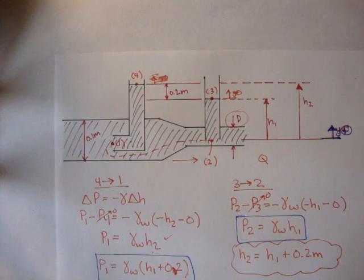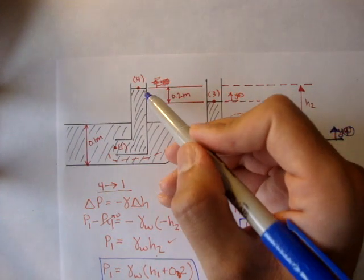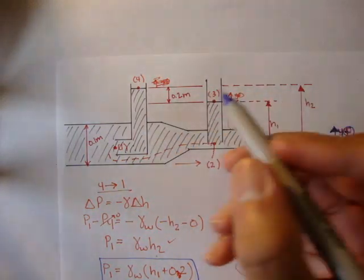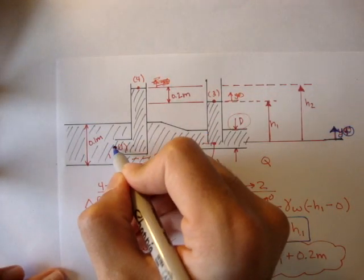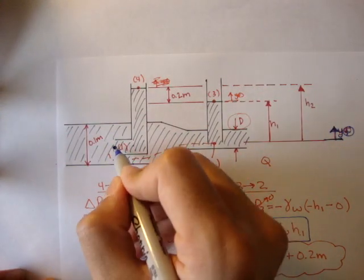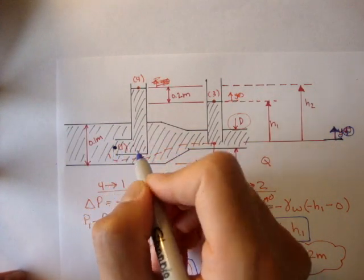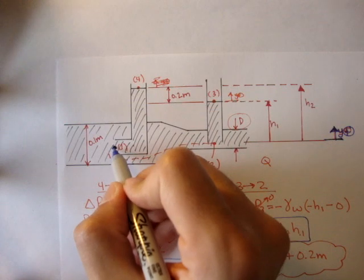Now if you remember our pitot tube example where we had a pipe coming up and then it turned against the flow of water, we call this a stagnation point because the velocity here was zero.